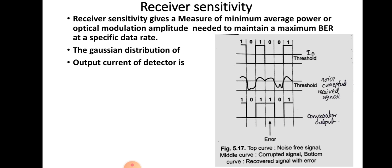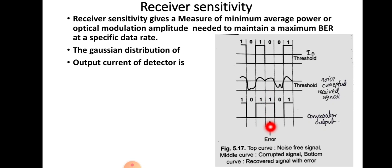The bottom curve gives the comparator output with output bits with error. The noise-corrupted signal, when received, is given to the input of a comparator, which makes the comparison and produces output. We can see that the sending signal is 101001, but when corrupted by noise, a 0 in one portion changed to 1. So in the output of the comparator, an error is produced — this represents the error signal.